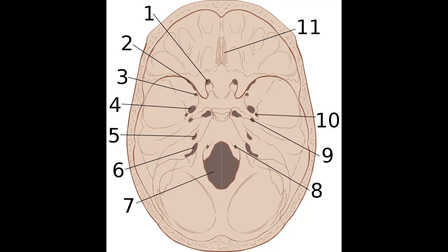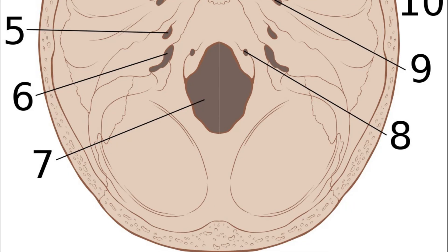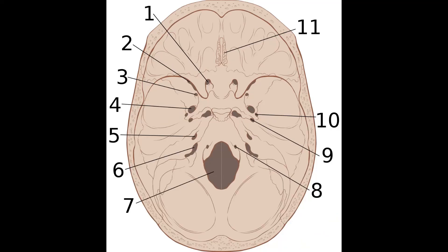Let's review what we've learned today: number one, optic canal; number two, superior orbital fissure; number three, foramen rotundum; number four, foramen ovale; number five, internal acoustic meatus; number six, jugular foramen; number seven, foramen magnum; number eight, hypoglossal canal; number nine, carotid canal; number ten, foramen spinosum; and number eleven, the cribriform plate. That's it for today — see you in the next one, take care!